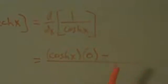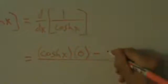And then we have minus the top, which is just 1, times the derivative of the bottom. The bottom is cosh of x. We already know its derivative is sinh of x. And then that's all being divided by the bottom squared now, so divided by cosh squared of x.